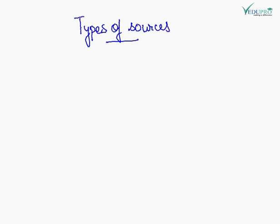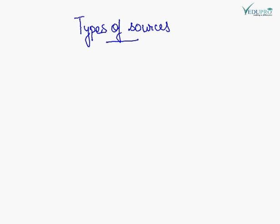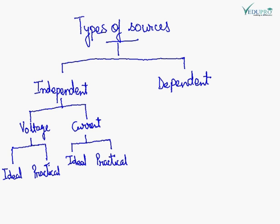We will see the types of sources. Sources, if broadly classified, there are two types: independent and dependent source. Independent sources are further divided into independent voltage source and independent current source.